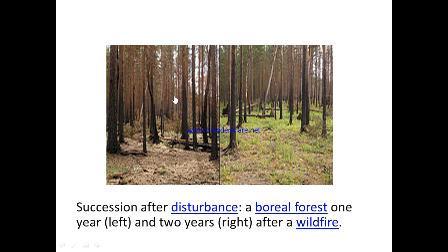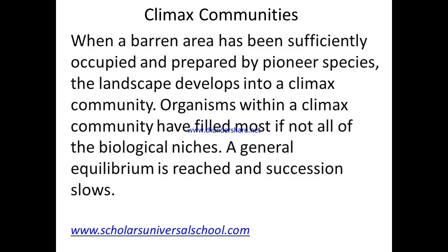The gradual restoration of a plant community is what we call succession. When a community has been established but is destroyed — by abandoned farmland, overgrazing, flooding, or fire — and the plant community has to be restored, we call this secondary succession. A climax community is when a barren land has been sufficiently occupied, prepared by pioneer species, and now has many intermediate species, different plants and animals. We say it has reached a climax community. Organisms within a climax community have filled most of the biological niches and have reached a general equilibrium.